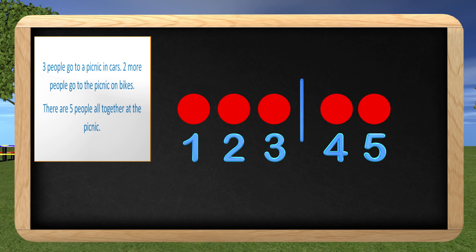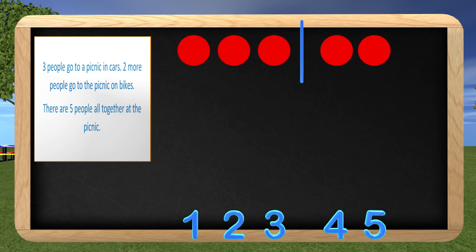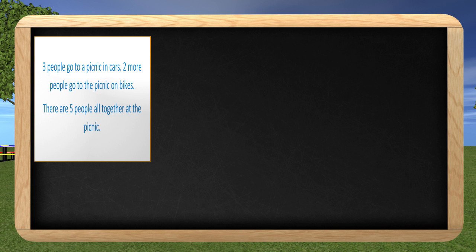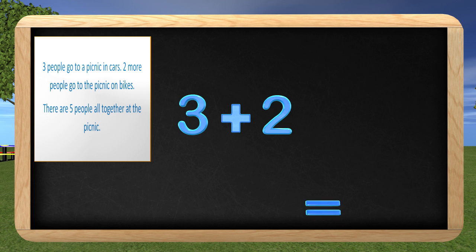I believe that is correct, but I need to write a math equation that goes with my word problem and my picture. If you do not know already, an equation is a math sentence, so let's go ahead and write an equation. We had three people who went to the picnic in cars, and we had two people that went on bikes. I want to know how many there are together, so I will put a plus sign in the middle to add these together.